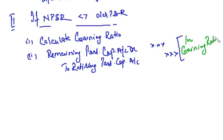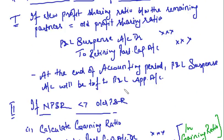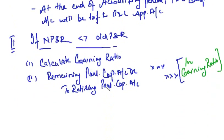In Case 2, the journal entry is: Remaining Partners' Capital Accounts debit, to Retiring Partner's Capital Account - in the gaining ratio. Be careful about this - just like we treat goodwill, that's how we treat this. So Case 1: new PSR equals old PSR, use P&L Suspense Account. Case 2: new PSR not equal to old PSR, calculate gaining ratio, remaining partners pay in gaining ratio.